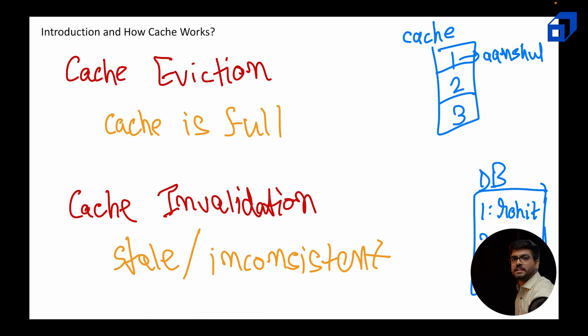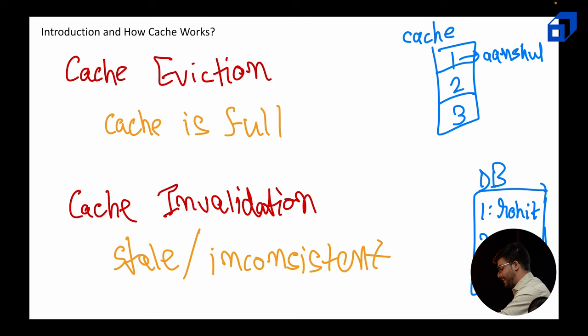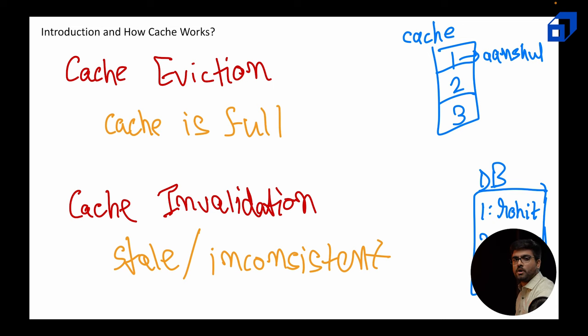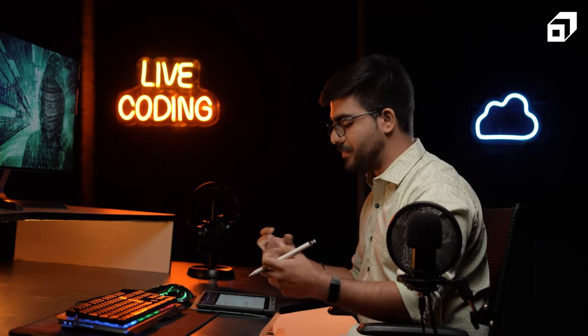This is also known as cache inconsistency. We need to make sure the cache is not inconsistent at any moment — either we can remove the entire entry altogether, or we update it from '1:Anshul' to '1:Rohit'. These are part of cache invalidation strategies. I just wanted to let you know what both of these terms actually mean.